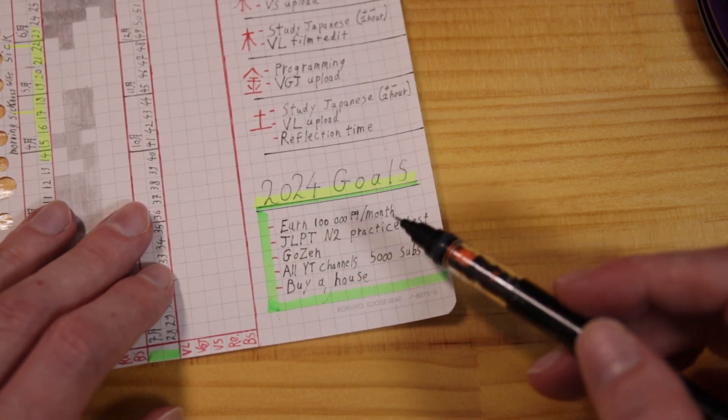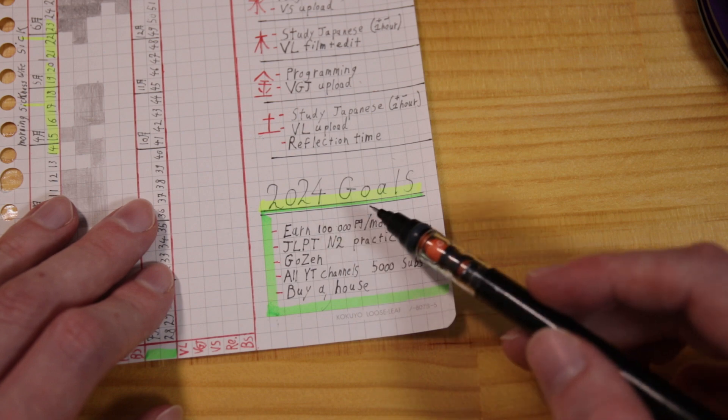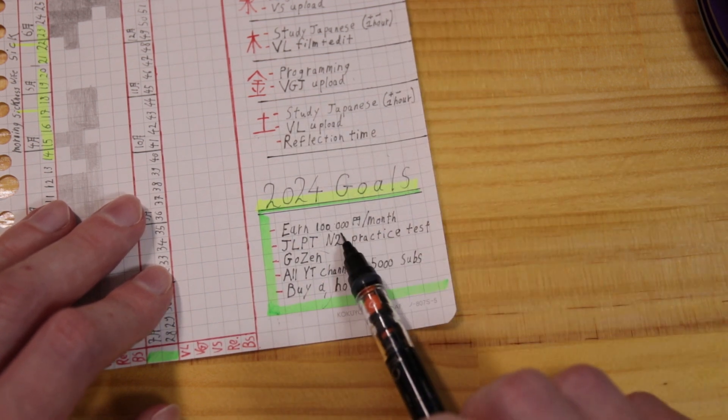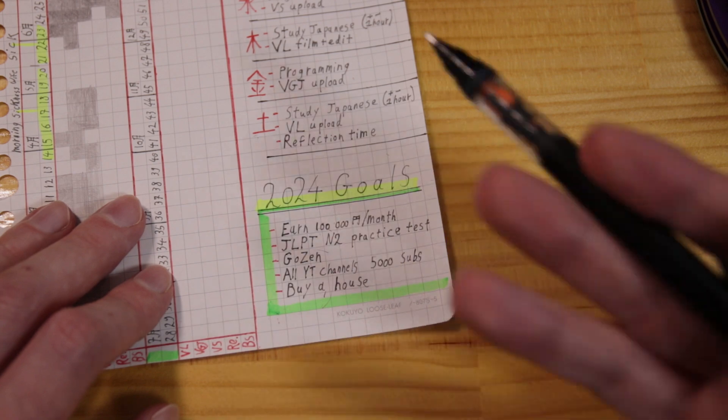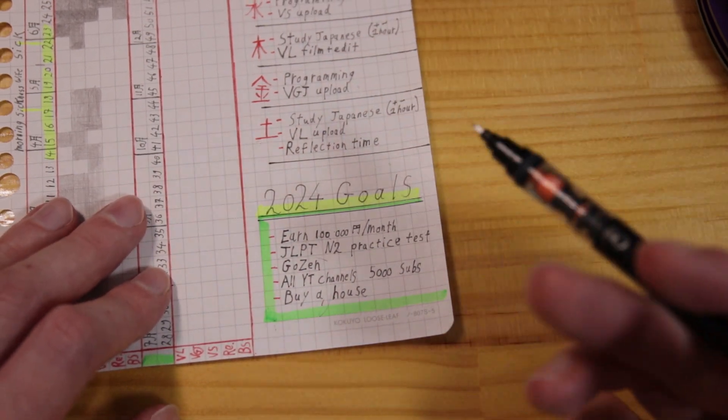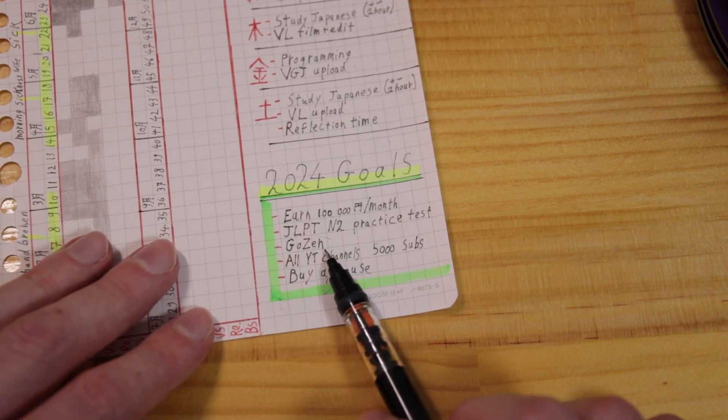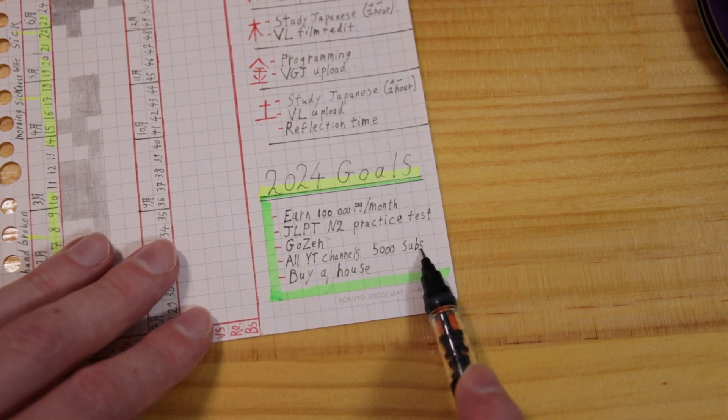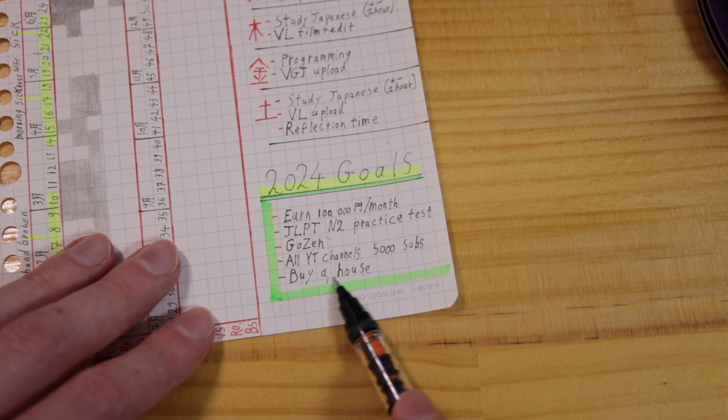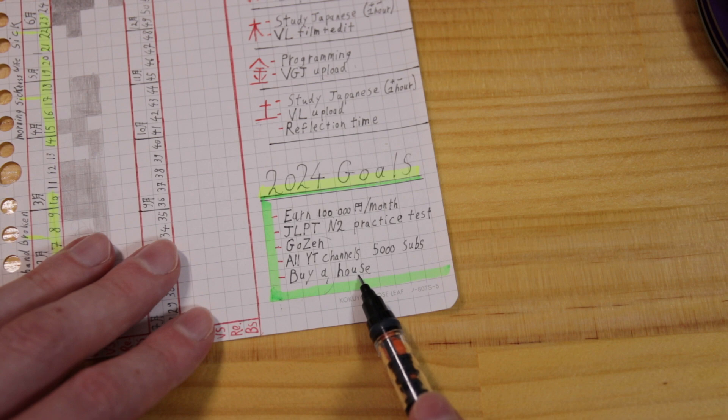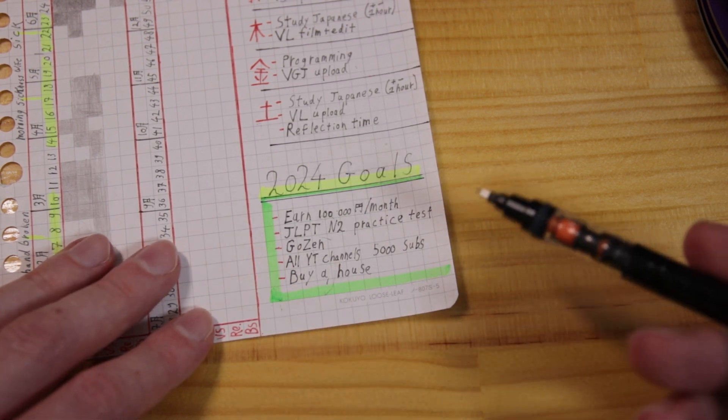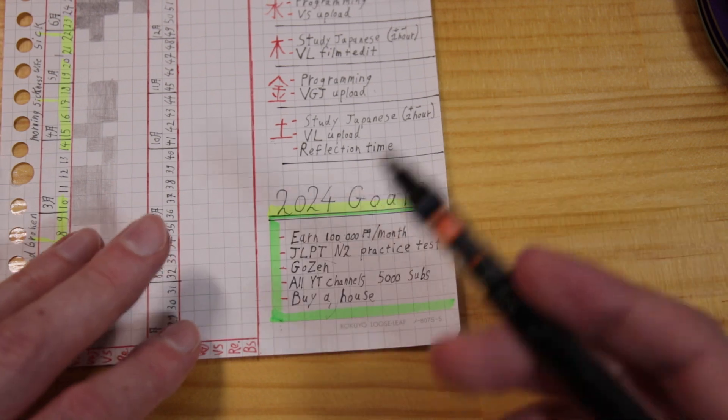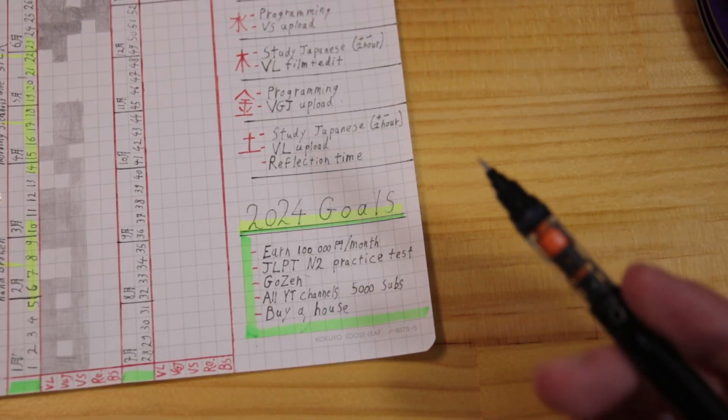And then I just have a small part of my goals. My goals for this year is basically earn GMIYen a month, which is basically half the amount of a full-time salary, kind of like a part-time salary. JLPT into practice test. I really want to pass JLPT into practice test because I'm not going to pay for the test anymore. They won't see my money anymore. Gozen, basically finish my video editor that I'm making. And I would like to have all my YouTube channels reach 5,000 subscribers. And possibly buy a house. This is a difficult one. We have been looking, but houses in this area in Osaka are a little bit too expensive. And moving to another place when there's a baby coming, not really an option. Especially because of my wife's work, it will be too difficult to go there.